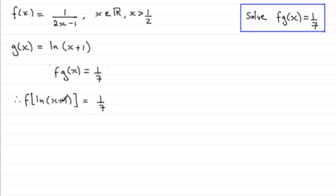Now, wherever we see an x in f of x, we replace it with the natural log of x plus 1. So we therefore have 1 over, and then we've got 2 times x, but as I said, we replace that x with the natural log of x plus 1, and then we've got minus 1. So that is f∘g of x, and we're told it equals 1/7.